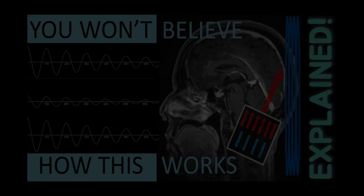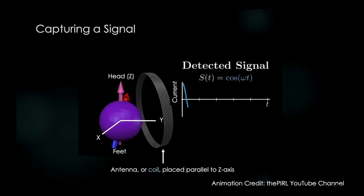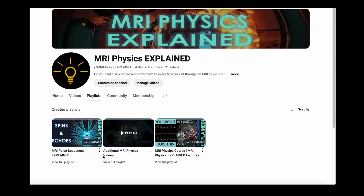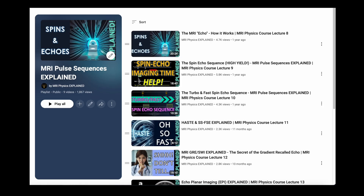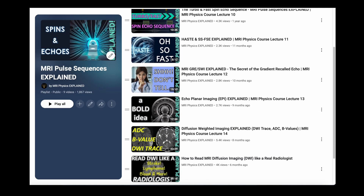So first, let's breathe a sigh of relief knowing that not all you've learned is false. This initial lecture on nuclear magnetic resonance — where we discussed how we generate and capture a signal — is true. This is how it works. Also, the long lecture series on the echo and the many different pulse sequences we employ is also true.